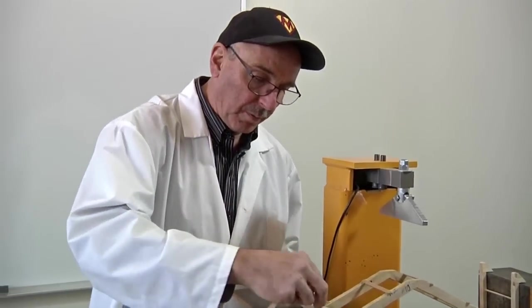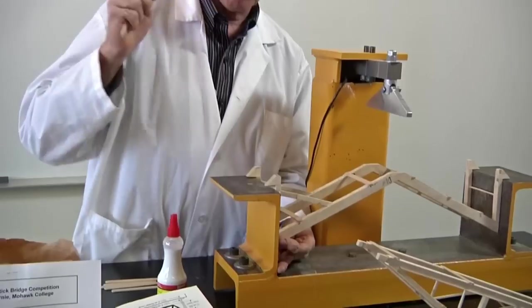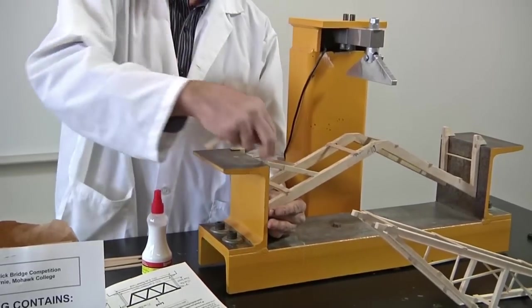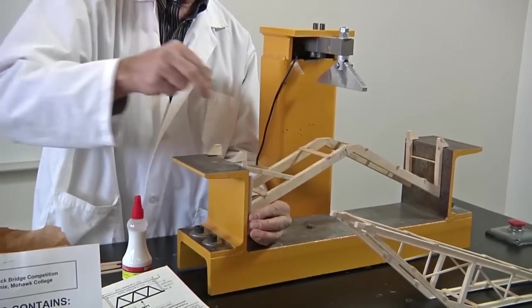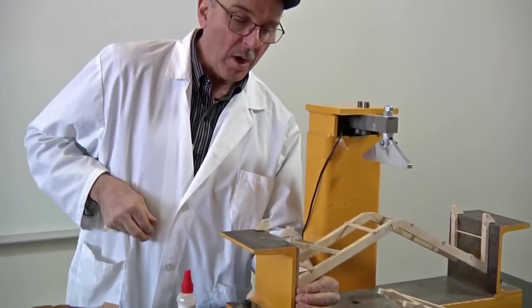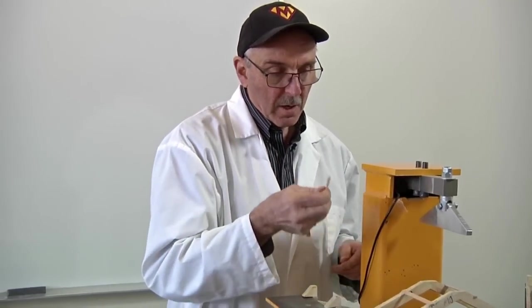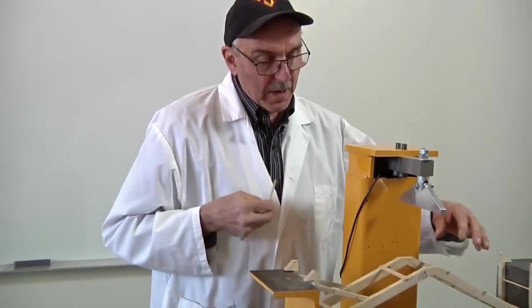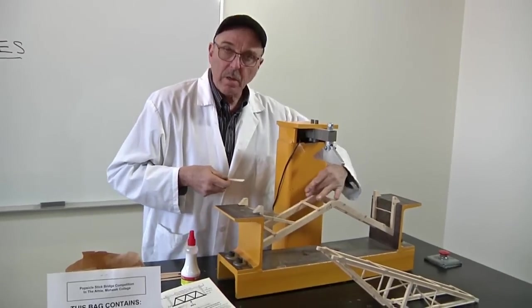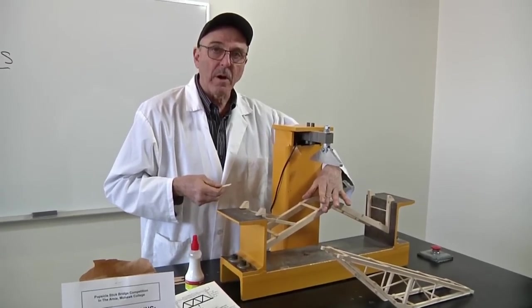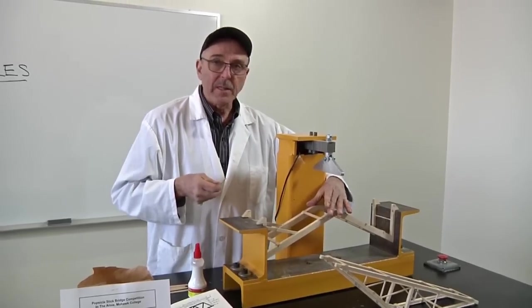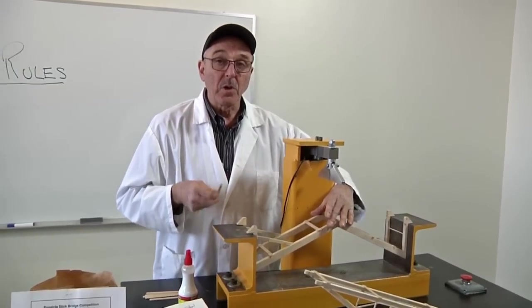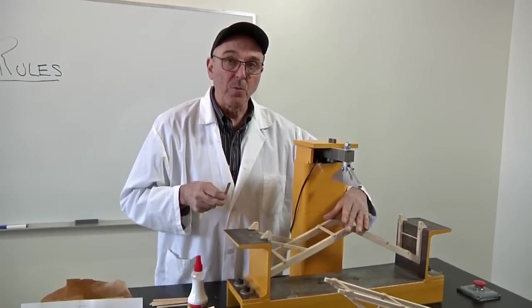Below the testing jig support level, we cannot be any lower than 110 mm. So again, one popsicle stick in height below the testing jig surface. Thirdly, the bridge cannot be any wider than one popsicle stick or 110 mm. Once again, these dimensions are maximum. You can use less than those dimensions if you want to, but you may not exceed those dimensions.